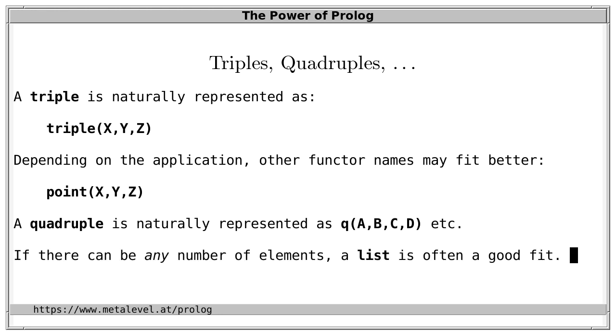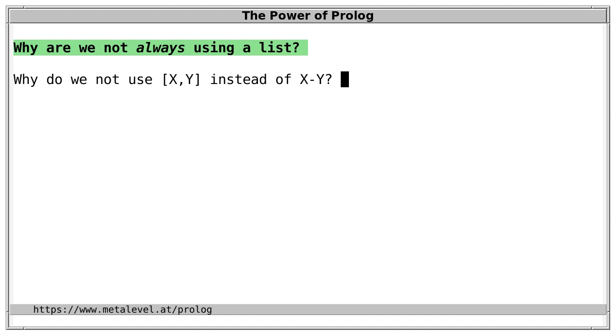Of course, if there can be any number of elements, then a list is often a good fit. Which brings us to the question, why are we actually not always using a list? Or phrased differently, why do we bother with pairs at all? I mean, why aren't we simply using a list with two elements to denote the pair x and y?